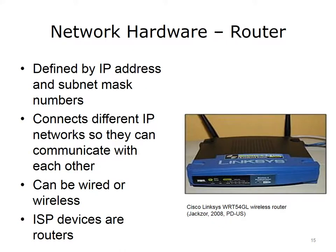Another important piece of hardware in a network is the router. A network boundary is defined by IP addresses and subnet mask numbers. A router can connect different IP address networks so they can communicate with each other. Routers such as ISP devices and WAPs can be wired or wireless. The image on this slide is a Cisco Linksys wireless router, typically found in a small office or home office, or SOHO network. The blue Ethernet cable extending from the back right of the router connects this WAP to the wired network. Routers use IP addressing to route network traffic. Note that routers route and switches forward traffic.